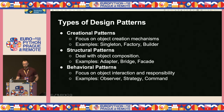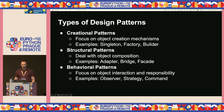We have three categories of design patterns. The first is creational patterns, which focus on object creation mechanisms — examples include Singleton, Factory, and Builder. Secondly, we have structural patterns, which deal with object composition — examples include Adapter, Bridge, and Facade. Last but not least, we have behavioral patterns, which focus on object interactions and responsibilities.